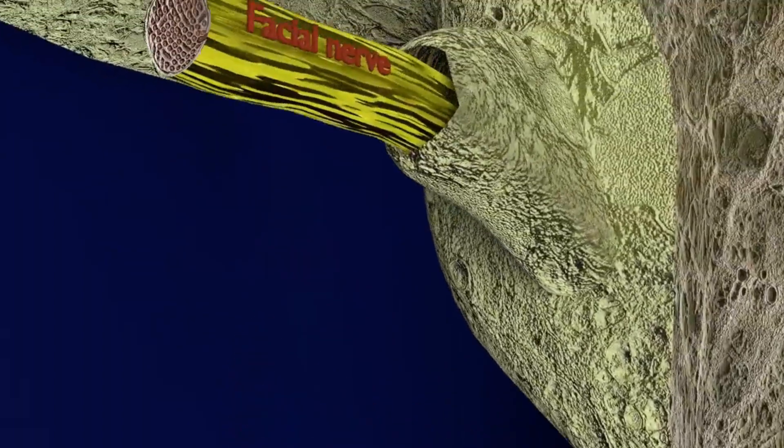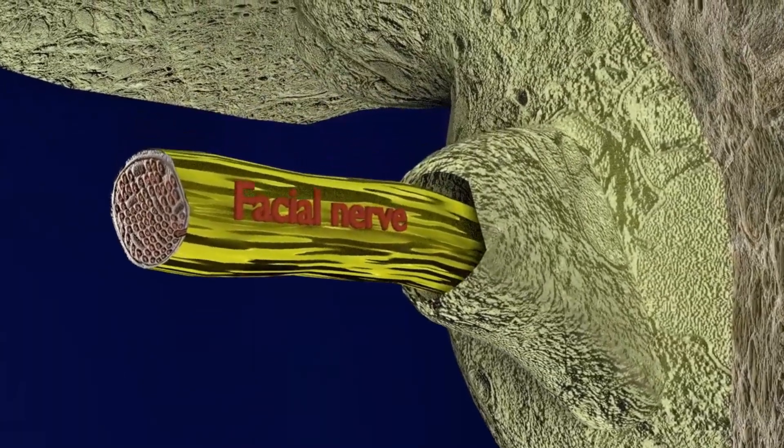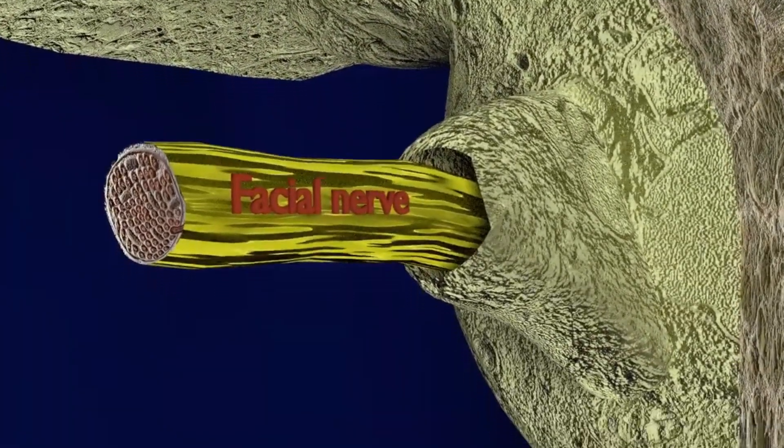Here, you can see the facial nerve exiting the stylomastoid foramen.